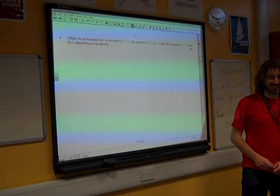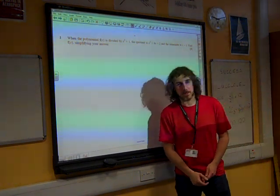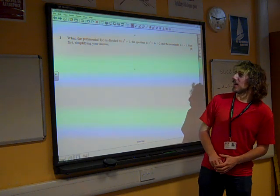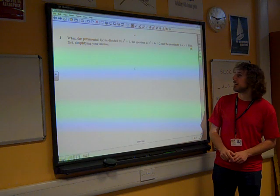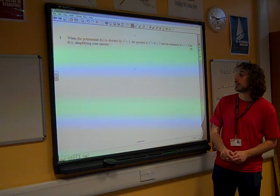Okay, so here we go. Question 1. When the polynomial f(x) is divided by x² + 1, the quotient is x² + 2, and the remainder is x - 1. Find f(x).